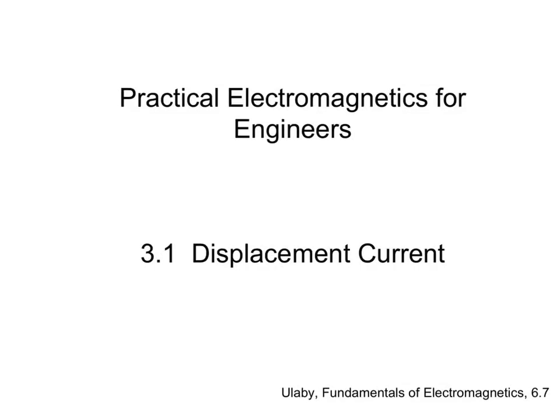Hi, welcome to the next in our series of Practical Electromagnetics for Engineers. If the slides look a little bit different today, it's because I'm traveling and I haven't prepared this in PowerPoint — I'm doing this directly on my iPad, so you'll see a lot more hand drawings. We're in a new section today, understanding changing electric and magnetic fields and how that allows energy and information to propagate through space. This first video covers something called displacement current. If you're following along in my class, chapter 6.7 of the textbook covers the material we'll be talking about today.